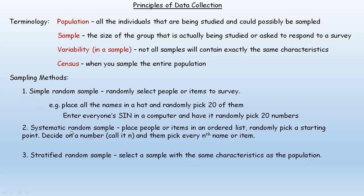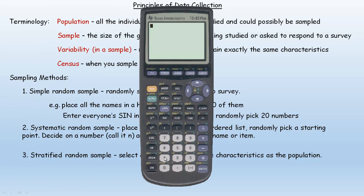Another method is called a systematic random sample. You place all the people or items in an ordered list, randomly pick a starting point, and then pick every Nth name on the list. For example, if you had 100 people and wanted a sample of size 20, you divide 100 by 20 to get 5, so you pick every fifth name on the list. That gives you a sample of size 20.